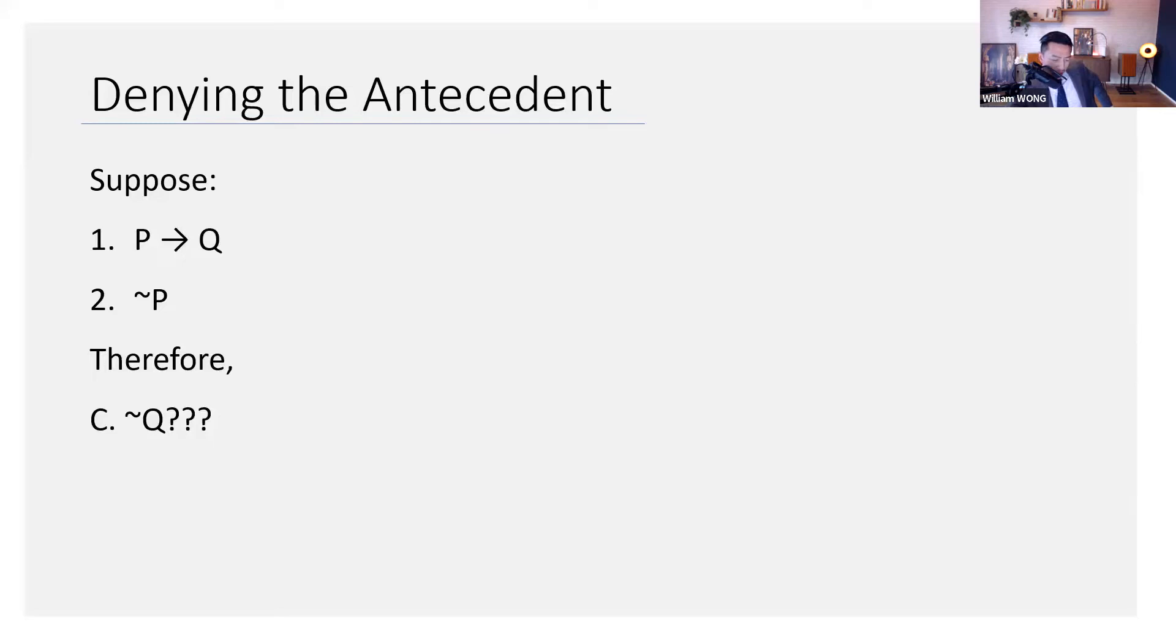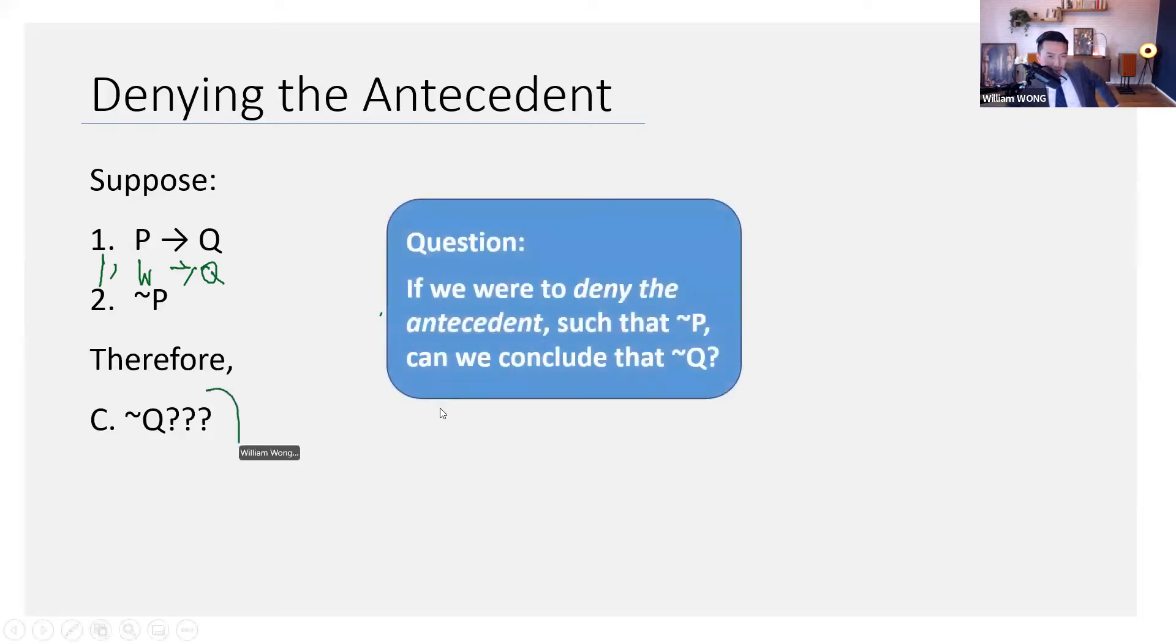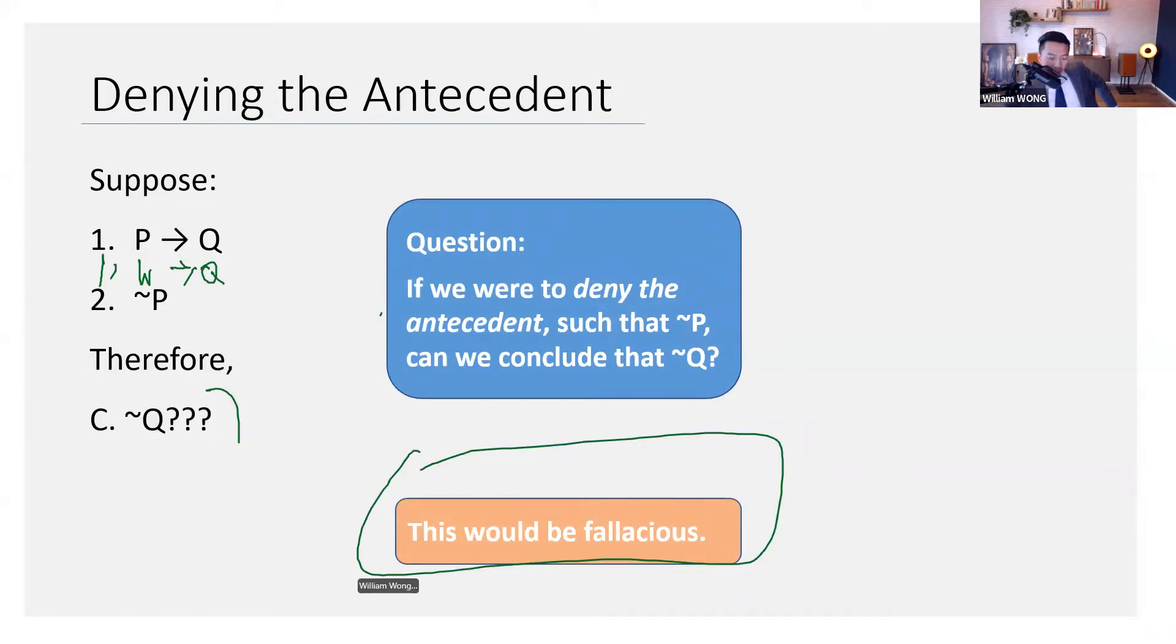What if we have premise 1 prime, that's W entails Q. Now, maybe it's true that not P, but aren't there other ways of getting Q? So how can we say not Q? In fact, this would be a fallacious argument, denying the antecedent.